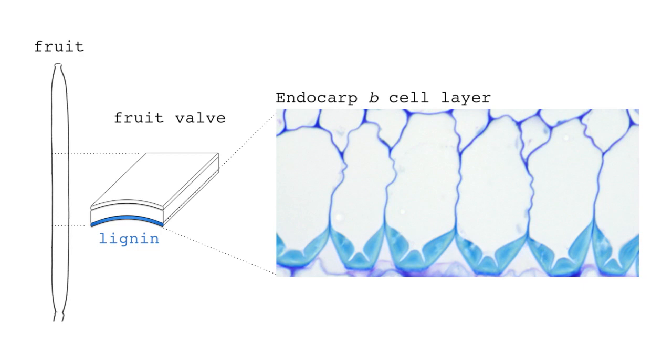The Cardamine fruit has more lignin. Now lignin is a stiff polymer found in wood. The lignin is deposited asymmetrically in a single cell layer of the fruit valve called the Endocarp B, and forms a unique hinge shape.